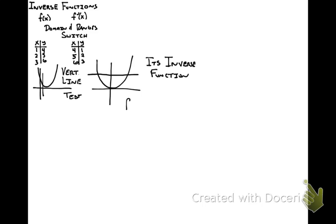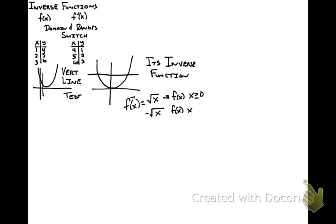In fact, the inverse of x squared is a piecewise function. The inverse of x squared is equal to the square root of x on the domain where f of x is greater than or equal to zero, giving you the top half of the graph, and negative square root of x on the domain where f of x is less than zero, giving you the bottom half of the graph.